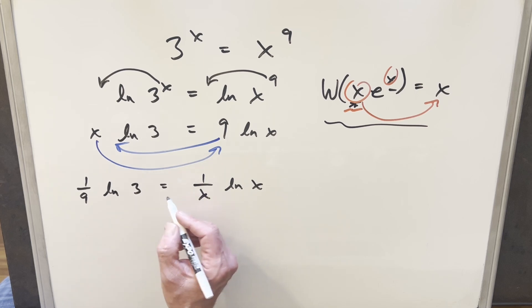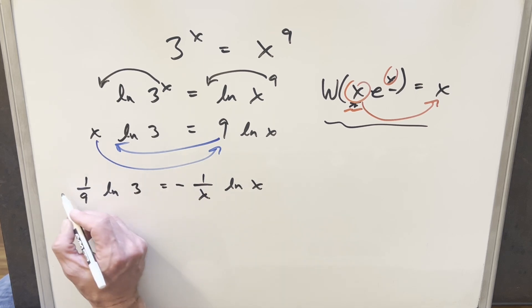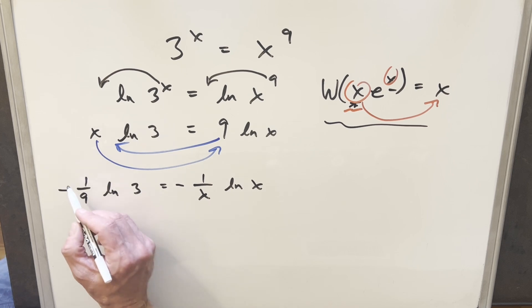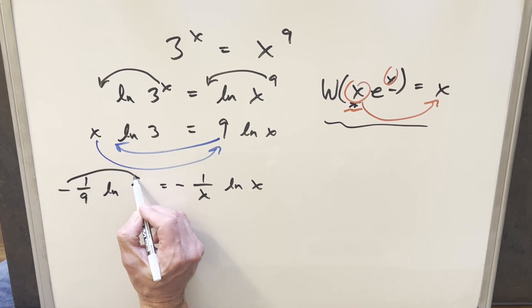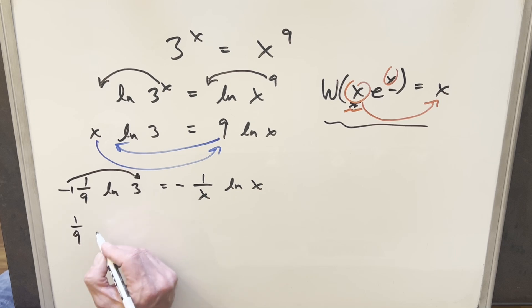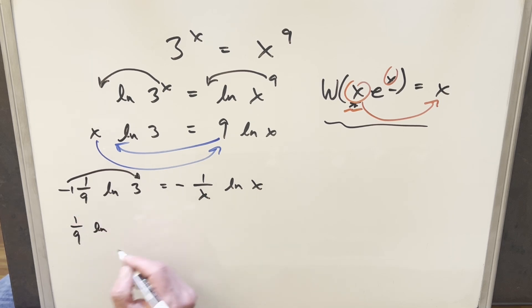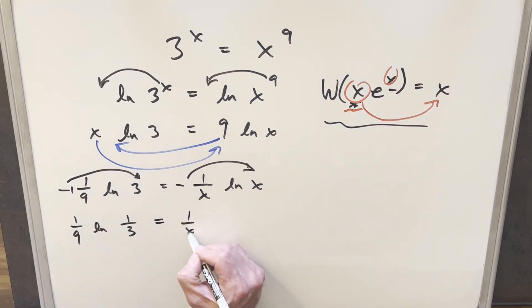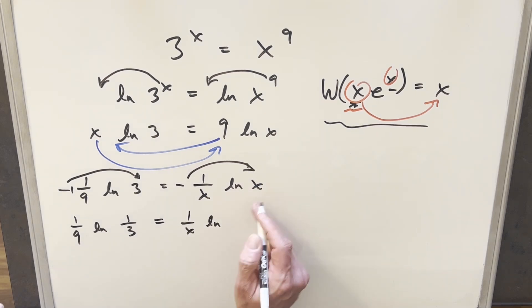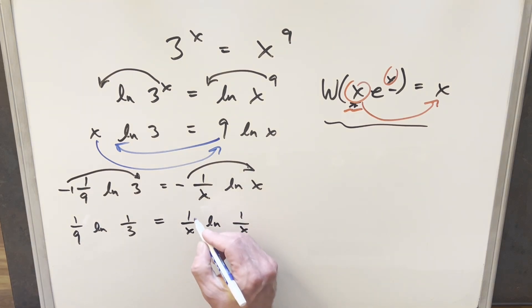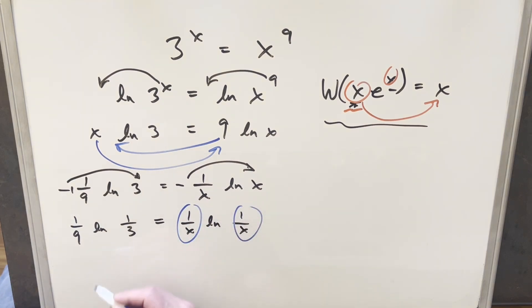We're headed in the right direction. What I can do is multiply by -1 on both sides. And using log properties, I can bring that -1 into the exponent. So now we'll have (1/9)·ln(3^(-1)), which I can write as (1/9)·ln(1/3). And on the right side, similarly, (1/x)·ln(x) to the -1 power becomes (1/x)·ln(1/x).